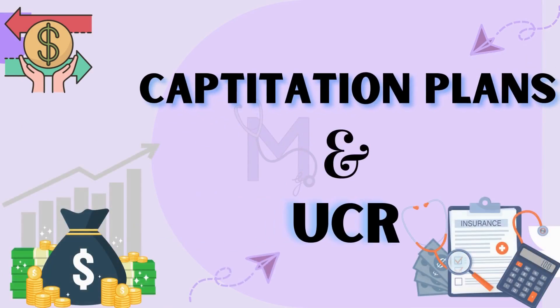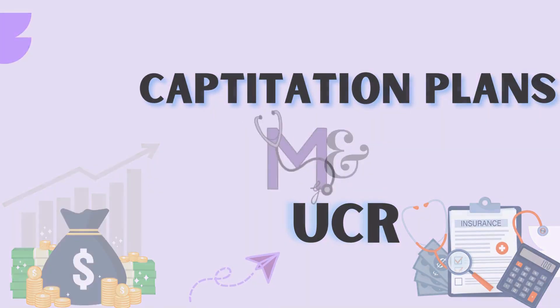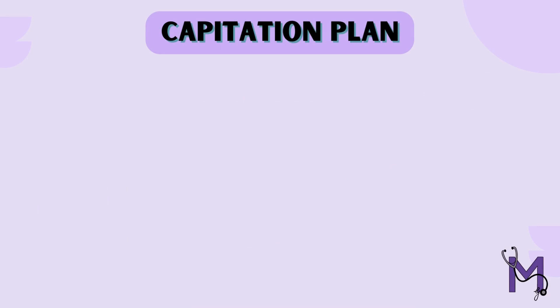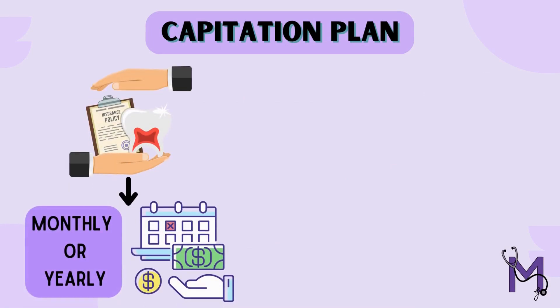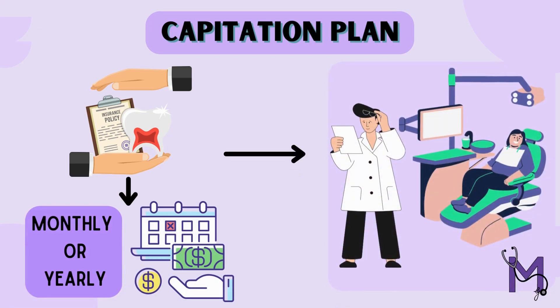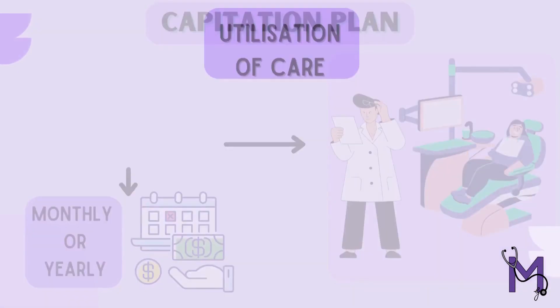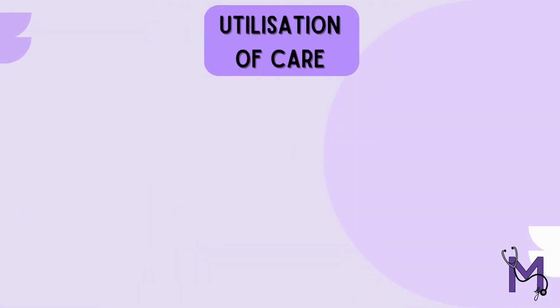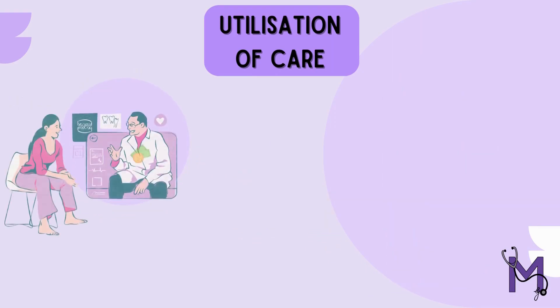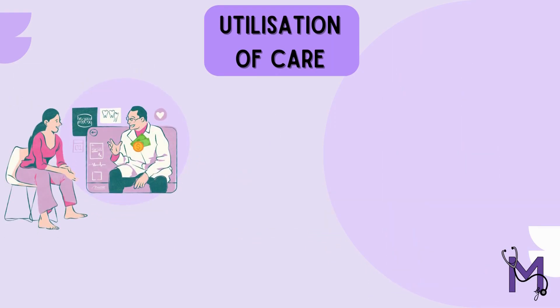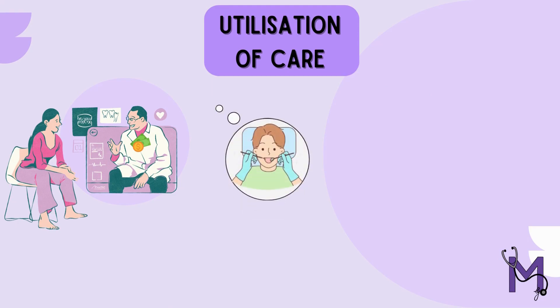In today's video we will study the capitation plans and UCR fees. A capitation plan is a type of dental insurance plan where a fixed monthly or yearly fee is paid by the patient based on the number of patients assigned to the dentist for treatment. However, irrespective of whether the patients utilize the care or not, the money is paid to the dentist.